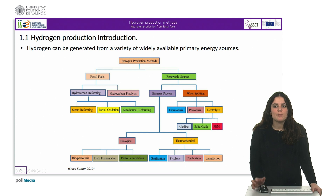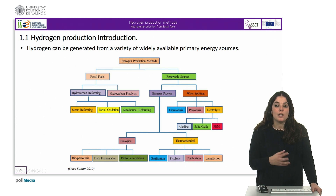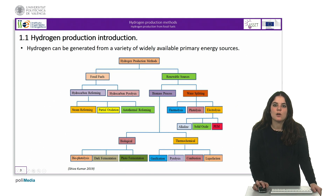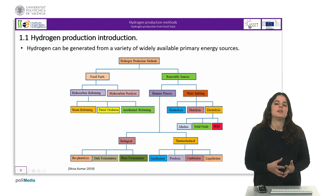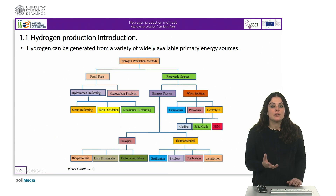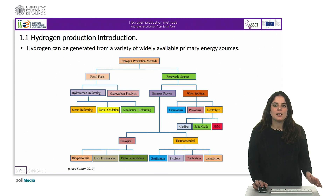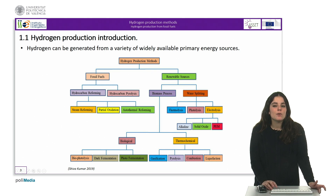Fortunately, the same processes used to produce hydrogen from natural gas, oil and coal can be applied to fuels obtained from biomass, opening up huge prospects for the production of clean hydrogen. In the same way, by using electricity from renewable sources to electrolyze water, clean hydrogen can be produced with no carbon emissions, even though nowadays it is a more expensive option.